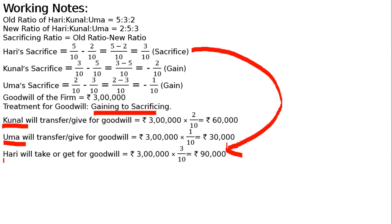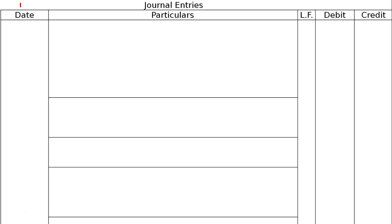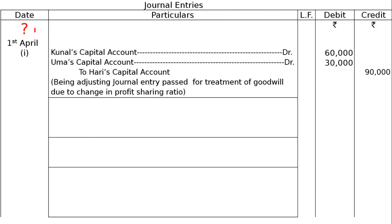The journal entry is: Kunal's capital account debited 60,000; Uma's capital account debited 30,000; to Hari's capital account 90,000. This is dated 1st April. Being: adjusting journal entry passed for treatment of goodwill due to change in profit sharing ratio.